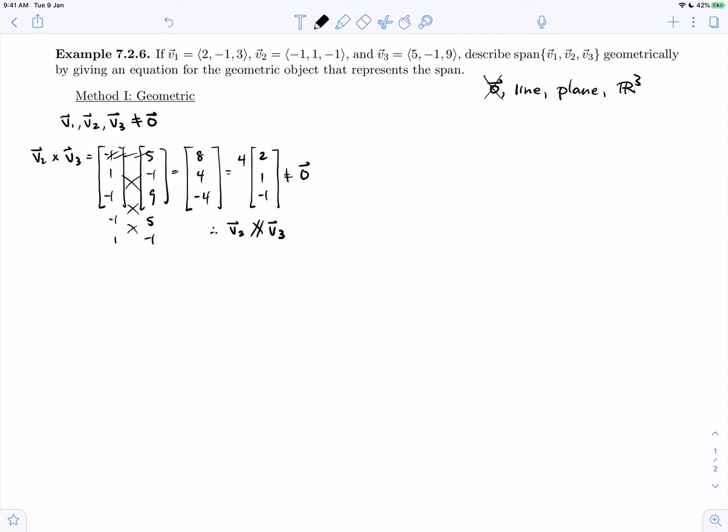So if those are non-parallel, if we have a pair of non-parallel generators, we know we do not have a line. Let's examine whether the vectors are coplanar or not to decide whether we have a plane or all of R3 as the span. We're going to look at v1 dotted with v2 crossed with v3. So v1 is (2, -1, 3) dotted with (8, 4, -4), which gives us 16 minus 4 minus 12, which is 0.